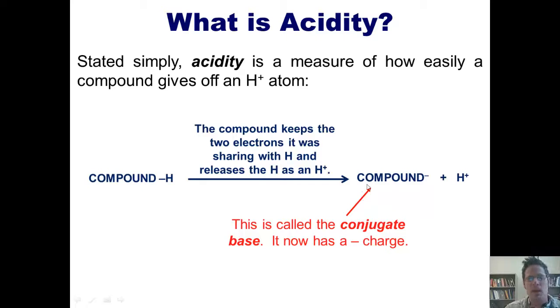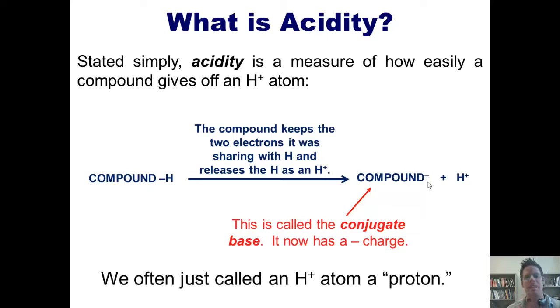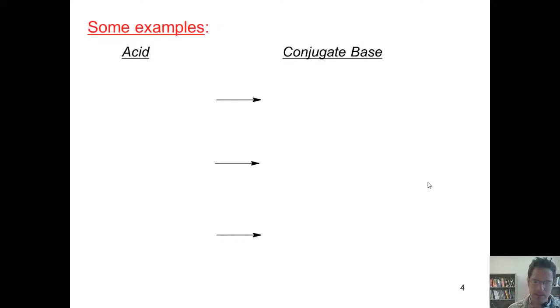So this compound stuck to the acidic H is an acid, and this compound where a minus charge is taking the place of that acidic H is called that acid's conjugate base. One more detail. Just so you know, we chemists often call H+ atoms just protons, because that's really all they are.